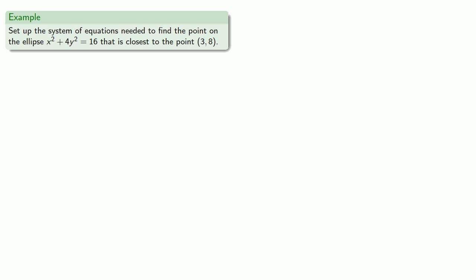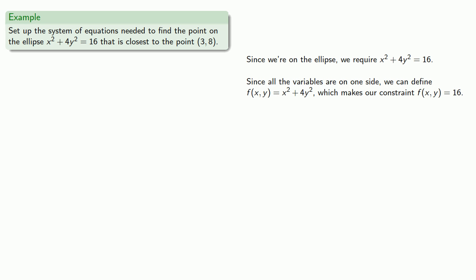So, for example, let's set up the system of equations needed to find the point on an ellipse that is closest to a point in the plane. Since we're on the ellipse, we require that x squared plus 4y squared equals 16. Since all of our variables are on one side, we can define a function of two variables, x squared plus 4y squared, and our constraint then becomes f of xy equals 16.